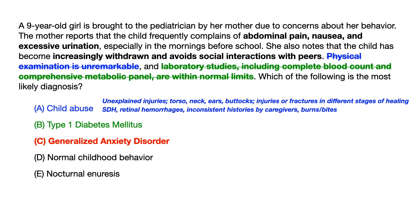Injuries or fractures that are in different stages of healing are a buzzword associated with child abuse — the implication being that the abuser inflicted an injury and then a week and a half later inflicted another, so you have injuries in various stages of healing due to the temporal nature of the abuse. Other high-yield physical findings include subdural hematomas and retinal hemorrhages. The test writer will often show pictures of this — a retinal hemorrhage in the eye or a CT scan revealing a subdural hematoma should make you think about child abuse.